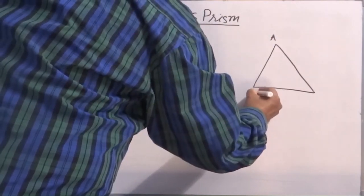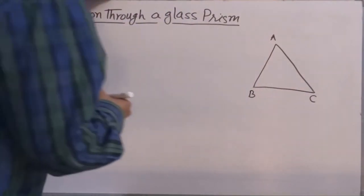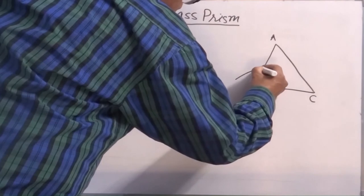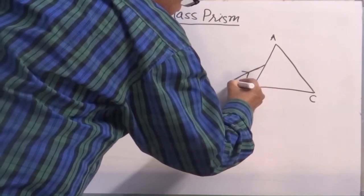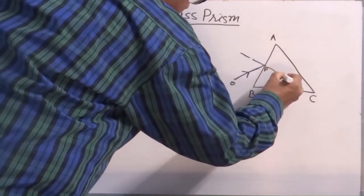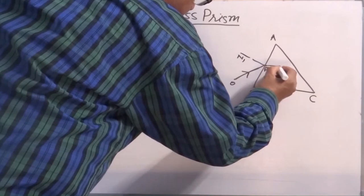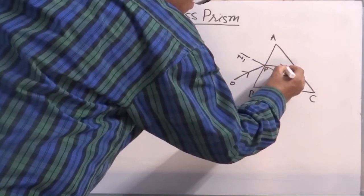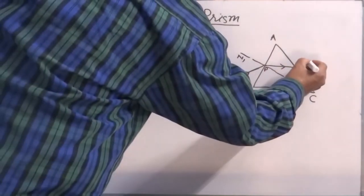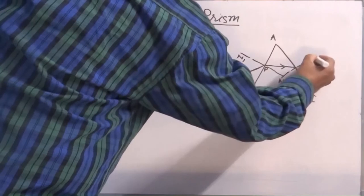Let us assume A, B, C is a glass prism. O, P is incident ray. This is normal N1. And this ray refracts inside the glass. Drop normal here also, say N2.